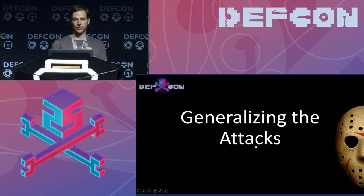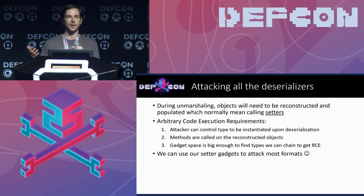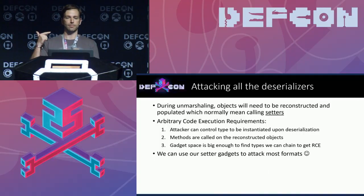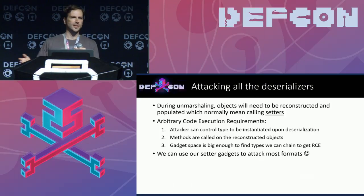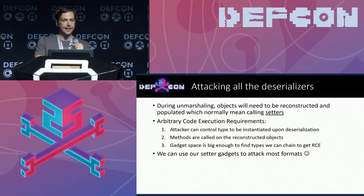This is not really a problem specific to JSON, XML parsers, Java deserialization, or BinaryFormatter for .NET. This is a problem in serializers themselves — all of them need to reconstruct objects during the deserialization process, meaning instantiating types that can be controlled by attackers, then invoking methods. The three high-level requirements — attacker controlling the type, methods being called on the reconstructed type, and a large enough gadget space — will normally apply to any serializer on any language. The ObjectDataProvider gadget and the JdbcRowSetImpl gadget will generally be good gadgets to attack any other libraries.